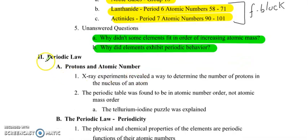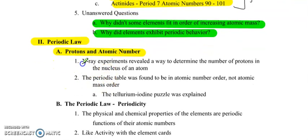So with all these unanswered questions, we needed some new technology. So looking at periodic law, protons and atomic number. Mendeleev didn't know about electrons, and he didn't know about protons or neutrons. X-ray experiments revealed a way to determine the number of protons in the nucleus of an atom. It was then revealed that the periodic table was found to be in atomic number order, not atomic mass order.